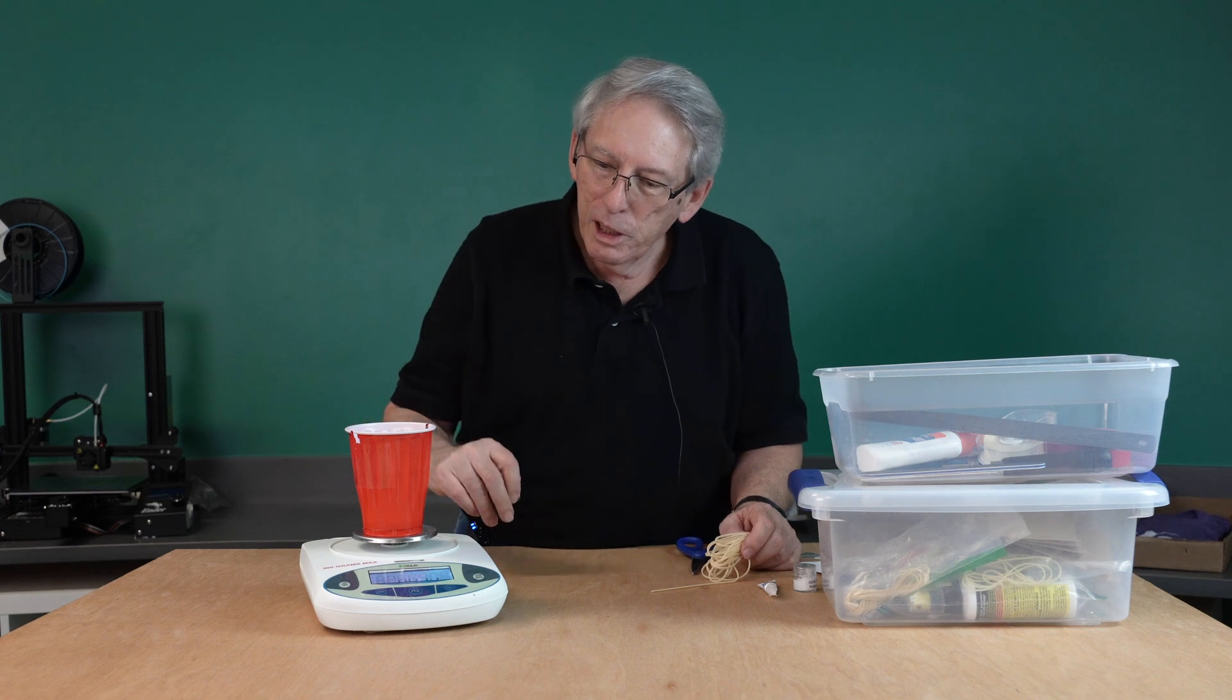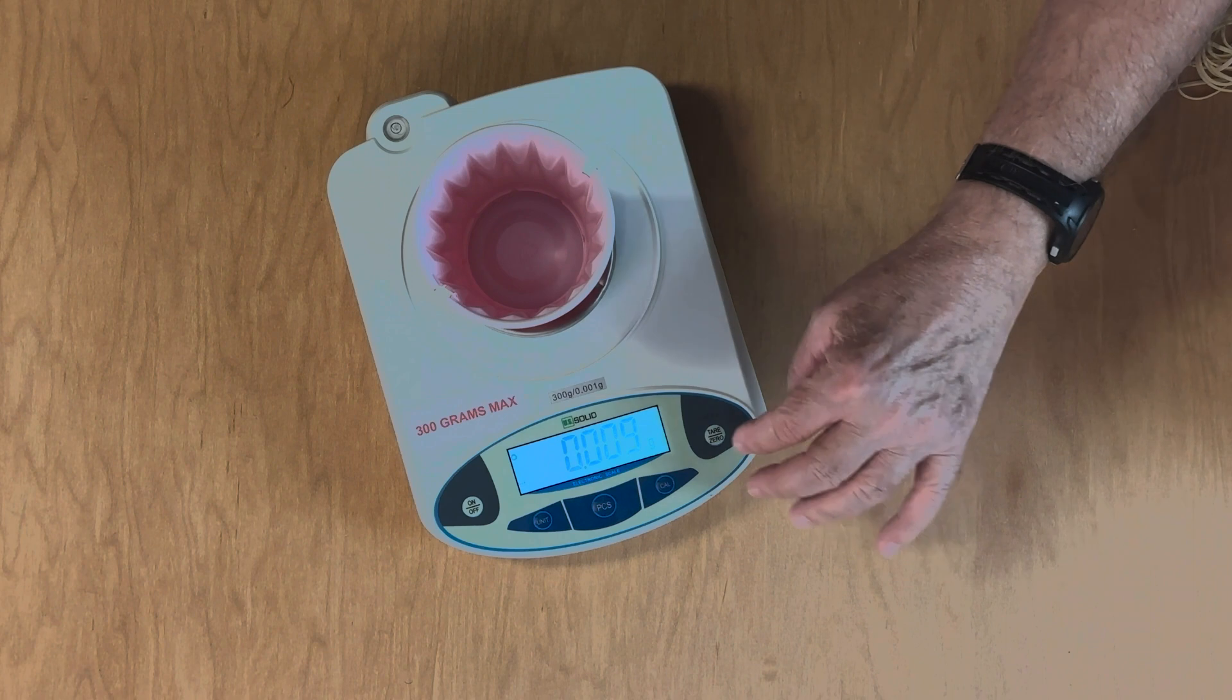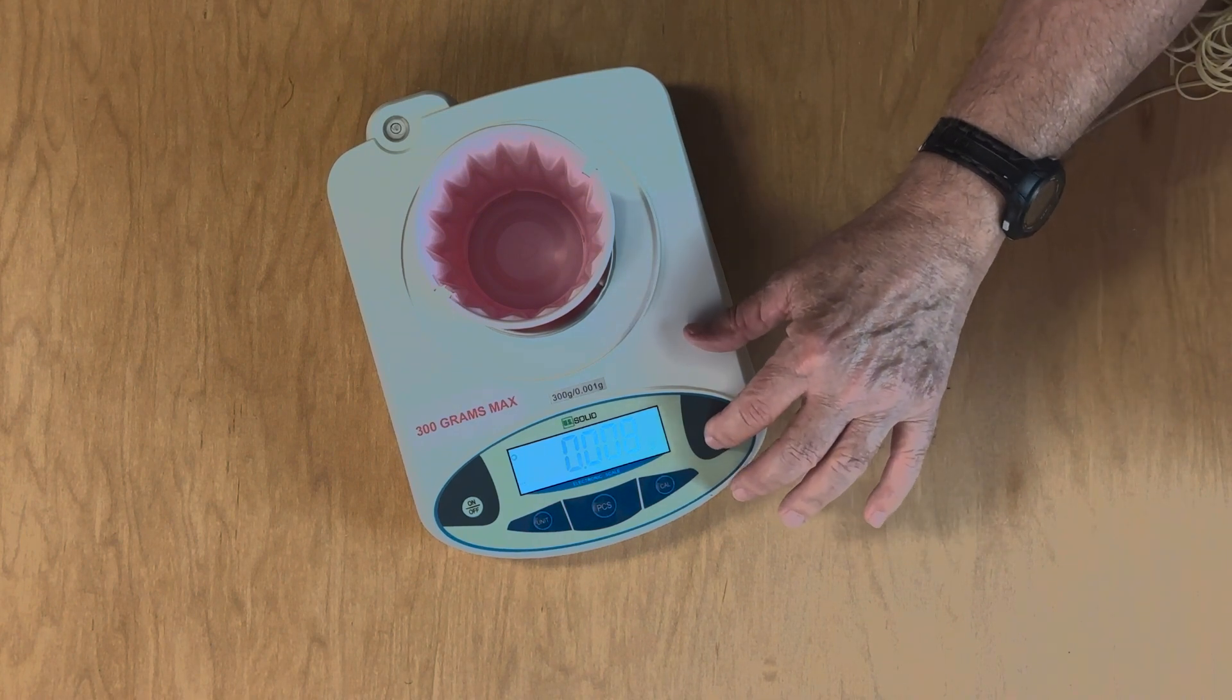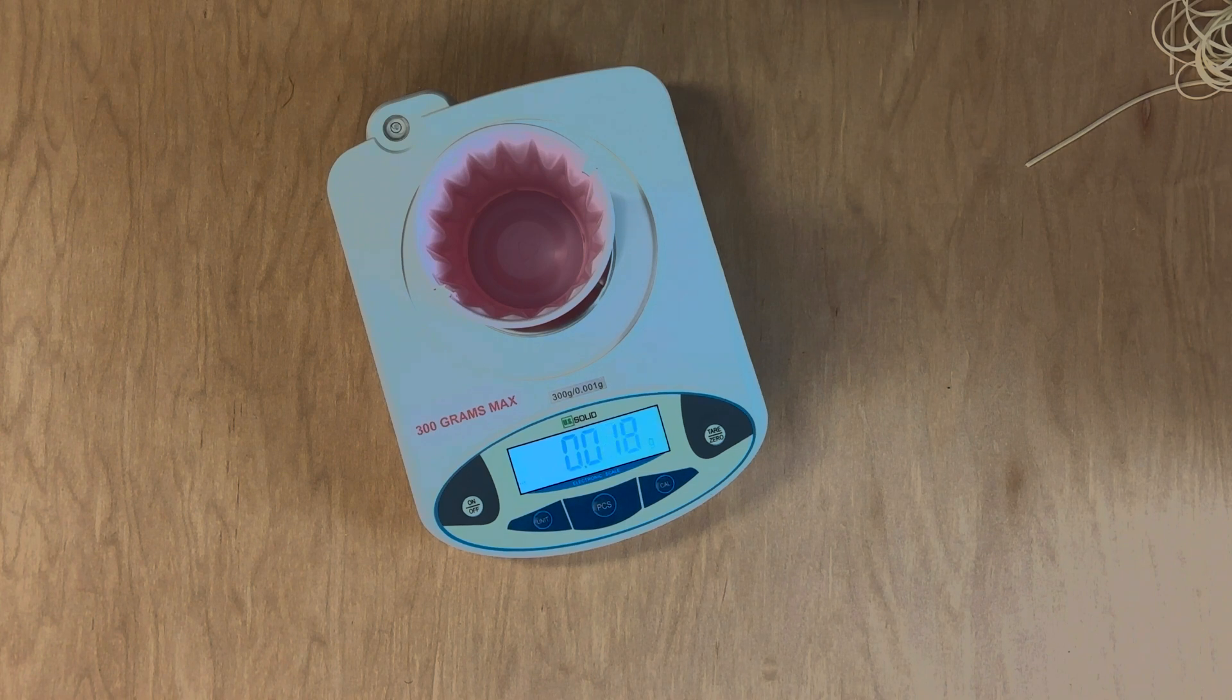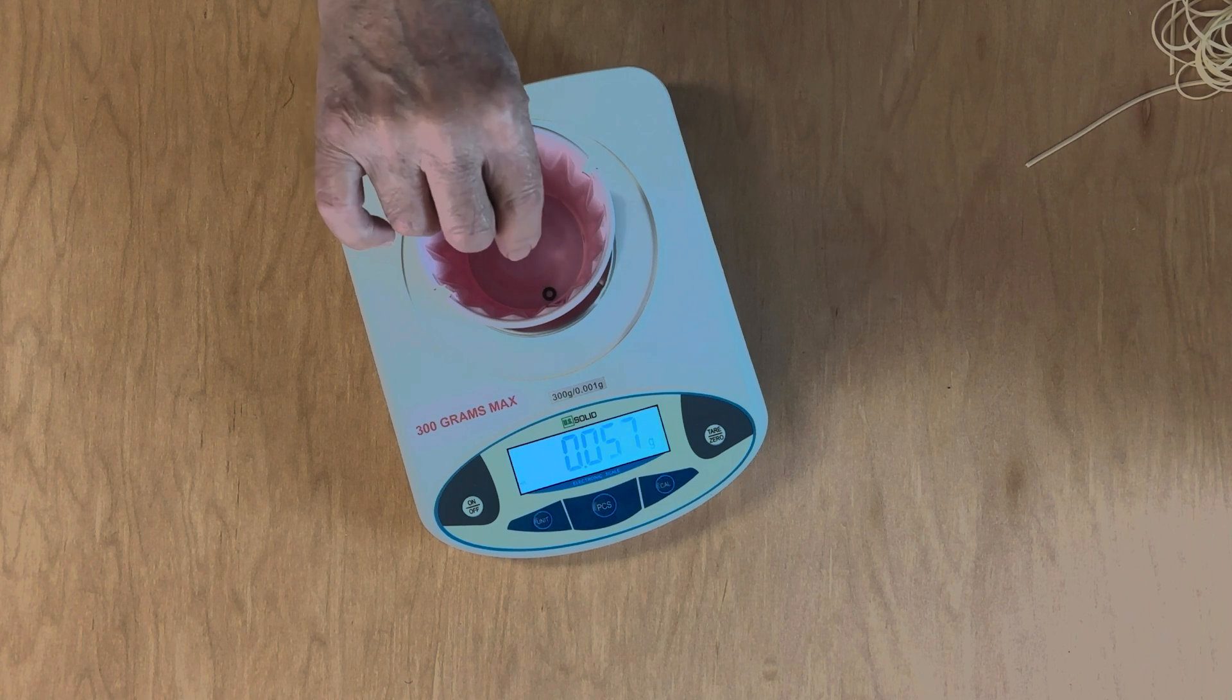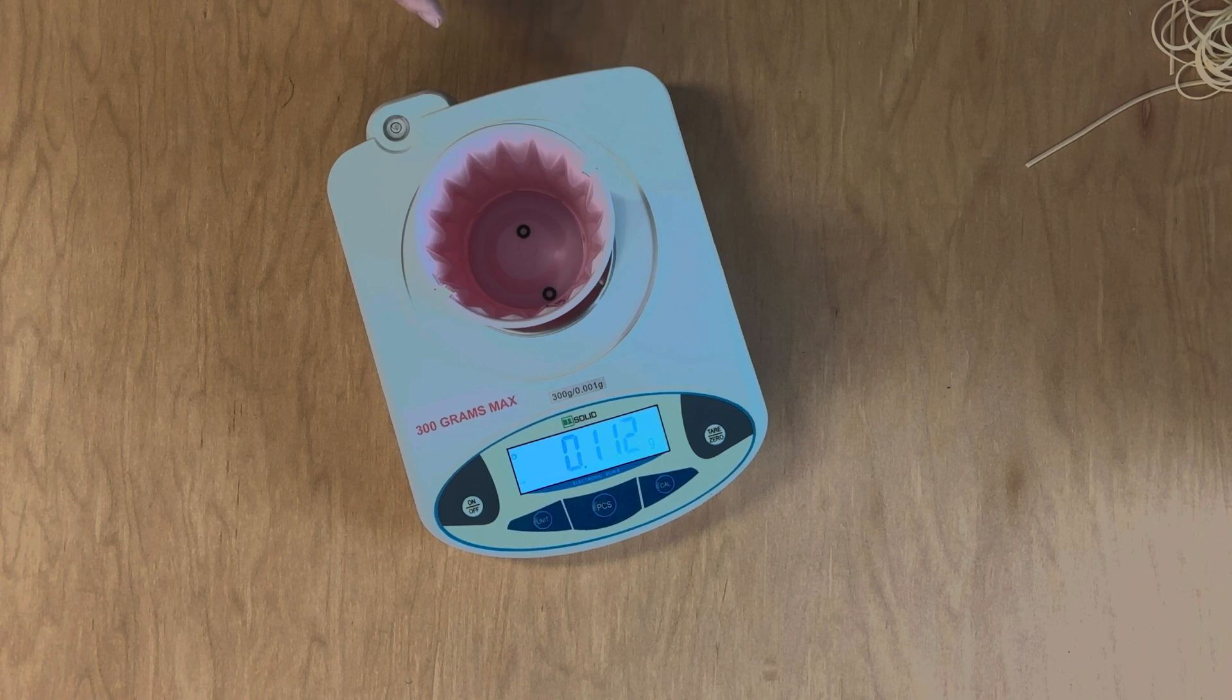So the first thing you want to do is make sure your scale is set to zero. So you tare the scales by pushing the tare button. Once it reads zero, put your O-rings in the cup. And as you can see, the O-rings weigh a little over a tenth of a gram.